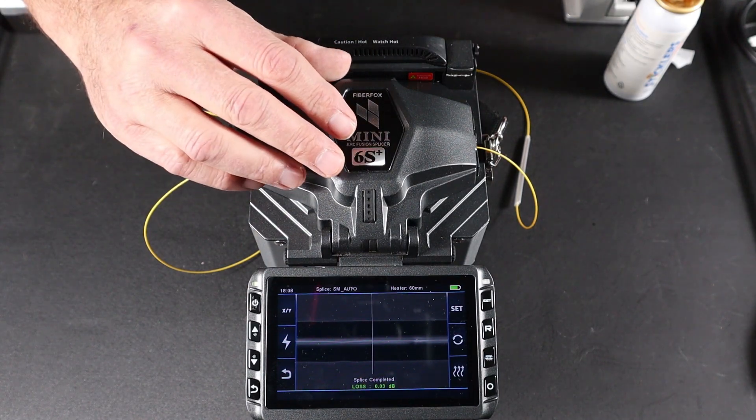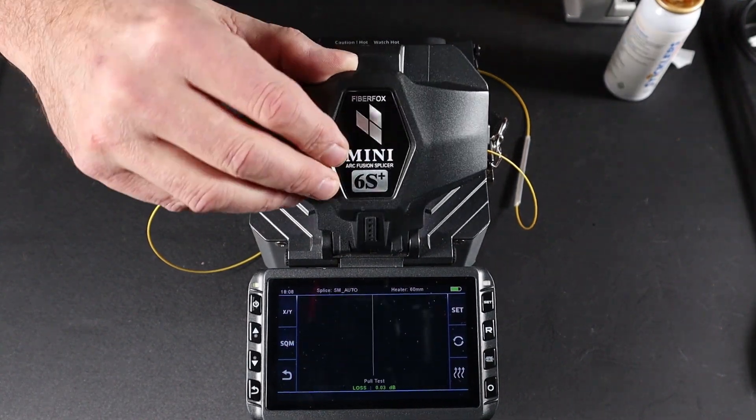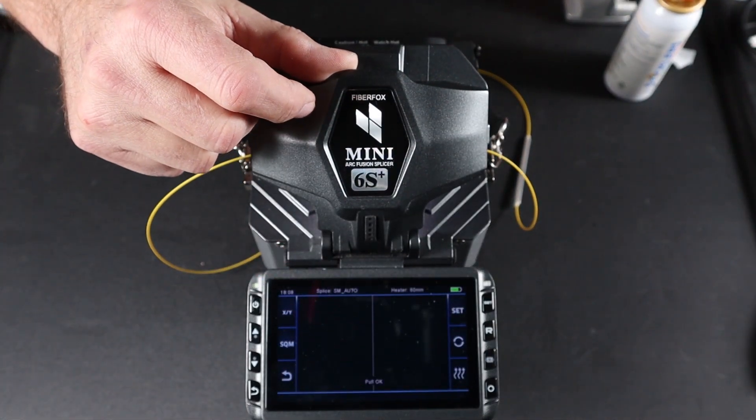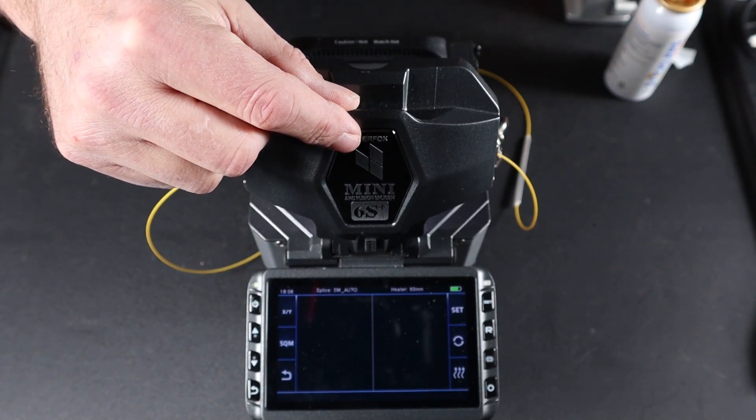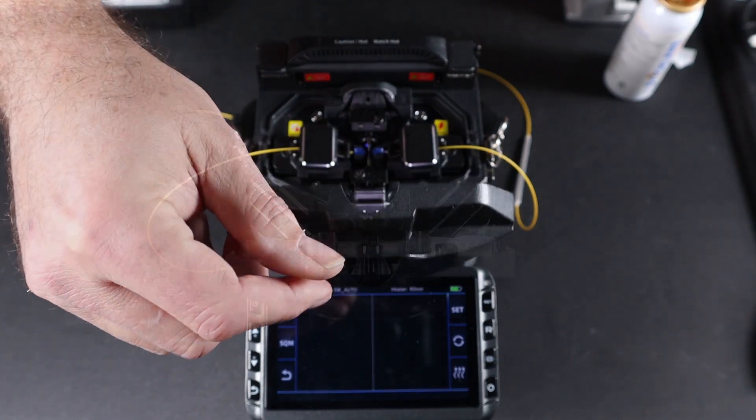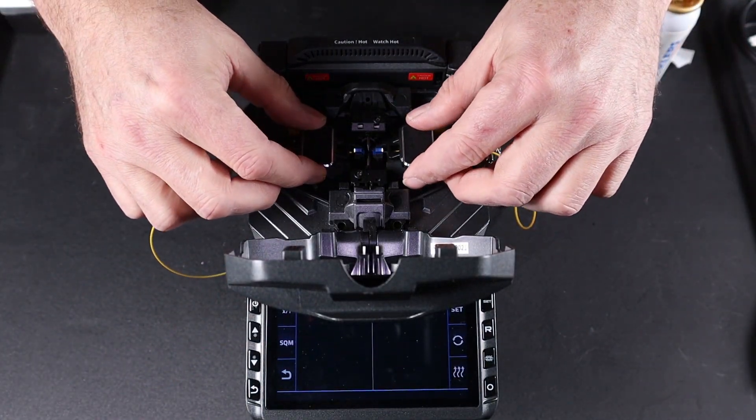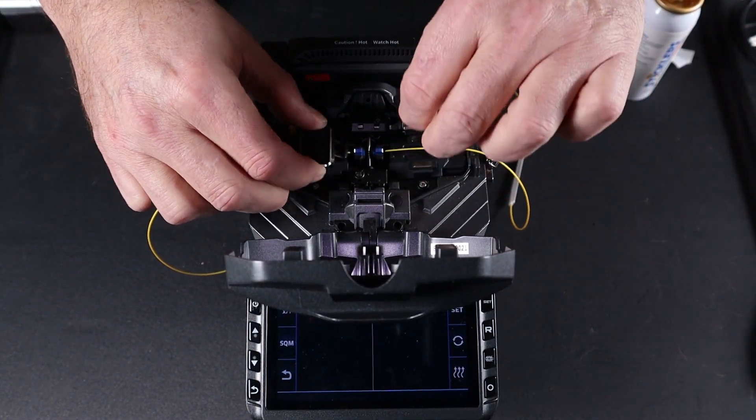Once complete, open your wing cover and allow it to perform a tensile test. This is a pull test on the fiber to test the integrity of the splice. Once complete, open your covers.